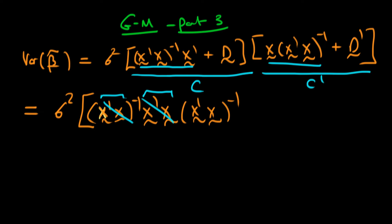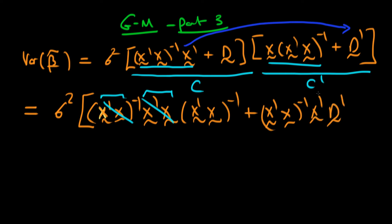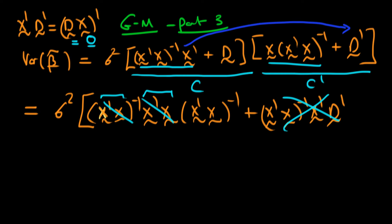The second term is going to be x primed x to the power minus 1 times x primed times D transposed. We can simplify this because x transposed times D transposed is actually equal to DX all transposed, because when you take the transpose of a product the order of multiplication inverts. We recognize that DX had to be equal to zero in order for our new estimator beta tilde to be unbiased. So in fact we've just got zero for the second term, and this whole term disappears.